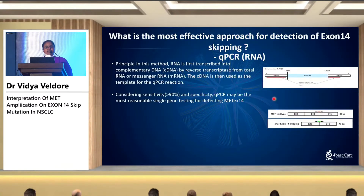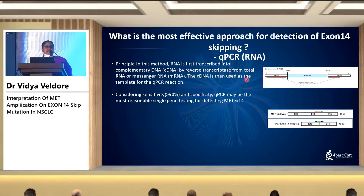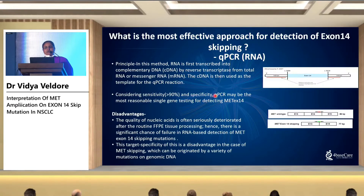A qPCR-based approach is simple and easy to understand: take the mRNA, put your probes on exons 13 and 15, and see whether exon 14 is getting skipped. However, with FFPE tissue, RNA is highly degraded. Assay failure, necrotic material, and fixation artifacts all contribute to reduced quality. Despite these challenges, sensitivity is still greater than 90% to pick up exon 14 mutations by RNA, though there are disadvantages like any other technology.